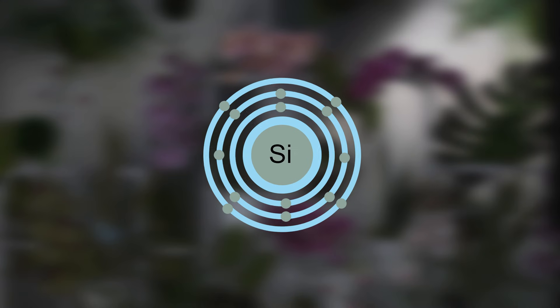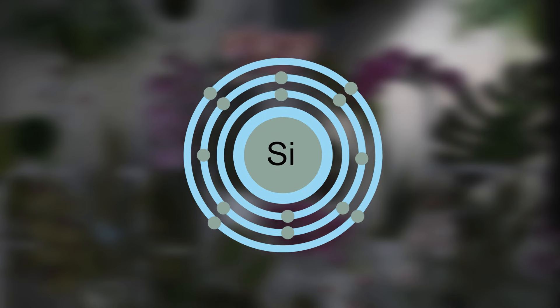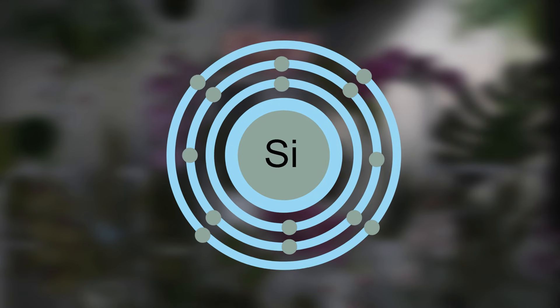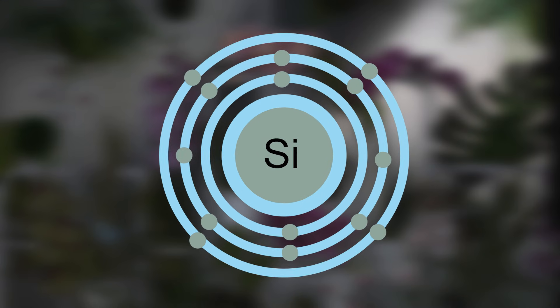Silicon has similar chemical behavior — it also has four valence electrons. So maybe one day we'll find a planet with a slightly different start to life that wound up with silicon-based life forms.